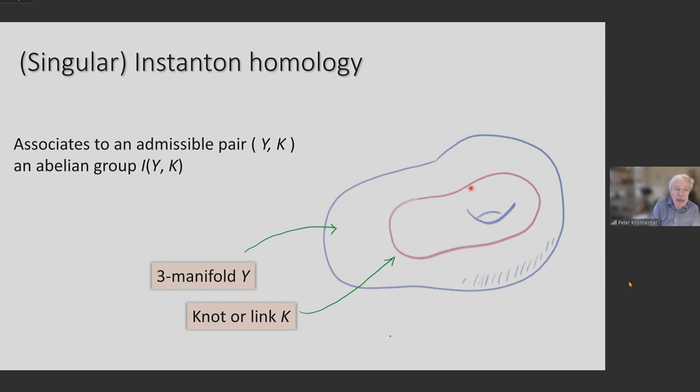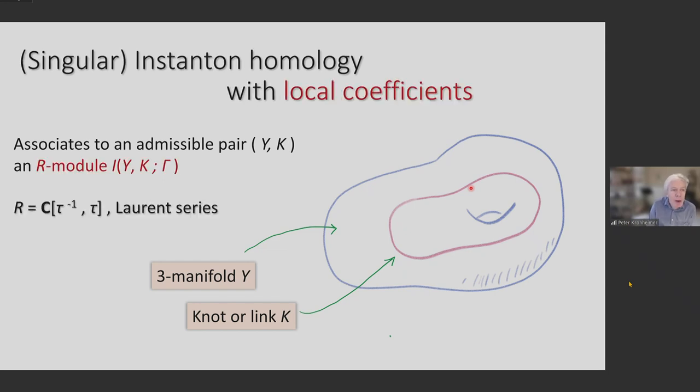What I'm talking about today is not directly the instanton homology of three manifolds as such, but singular instanton homology. Singular instanton homology associates to a pair, Y, a three manifold, and K, a link, associates to it an abelian group. I, I have YK, instanton homology. And admissible means that the link K has odd winding number in the three manifold with respect to some integer class. And I'm also going to be talking about instanton homology with local coefficients. The straight up instanton homology might have Z or rational coefficients. Local coefficients on the configuration space makes a slightly more sophisticated gadget. Gamma there in the notation here stands for the local coefficient system.